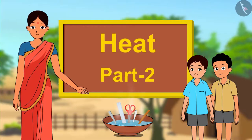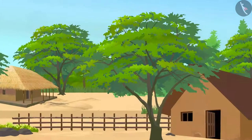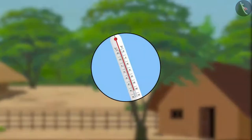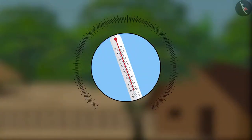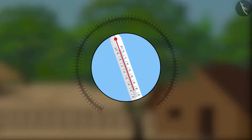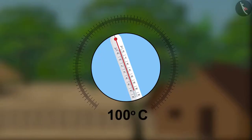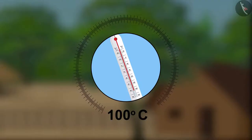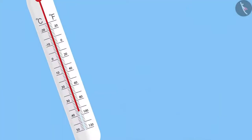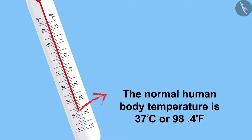Heat, part 2. Hello friends, how are all of you? I have had a fever for the last few days. I checked my fever on a clinical thermometer and the reading was 100 degrees Celsius, which is approximately 2 degrees higher than the normal reading. Do you remember the normal human body temperature? The normal human body temperature is 37 degrees Celsius or 98.4 degrees Fahrenheit.